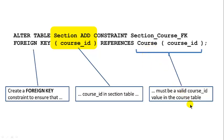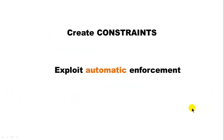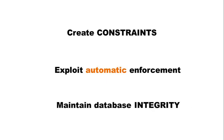The beauty of constraints is we create them so we can exploit the power of database systems to automatically enforce them. If you declare something as a primary key, the database will not allow anyone — even by mistake — to enter duplicate values; it will reject them. If the system doesn't enforce this, over time the database becomes nonsense with all kinds of errors when you try to look up data.